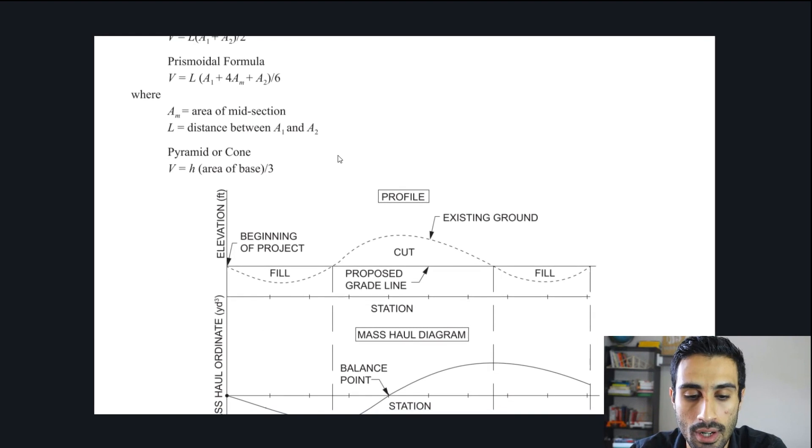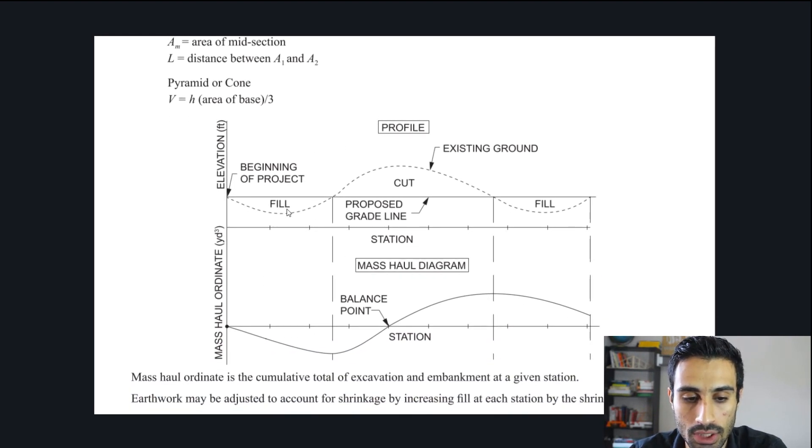What they did is add this figure. They give us this line, the dash line is the existing grade or the existing ground. Then the proposed grade, which is like the flat horizontal line, this one, the dark line. We have the beginning of the project at that station and we end here at this station. This is looking at the profile view, right?